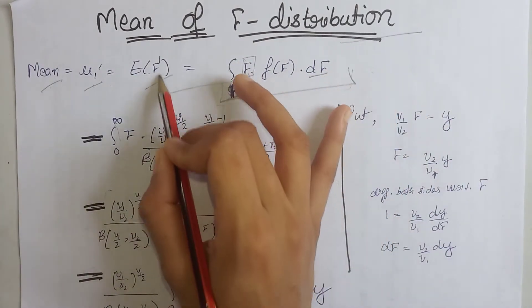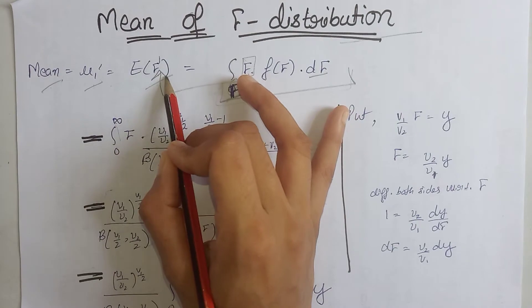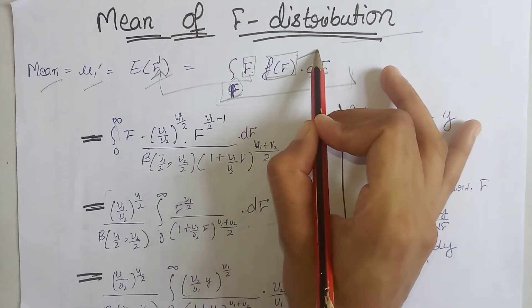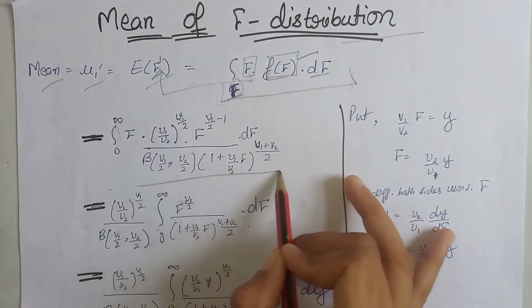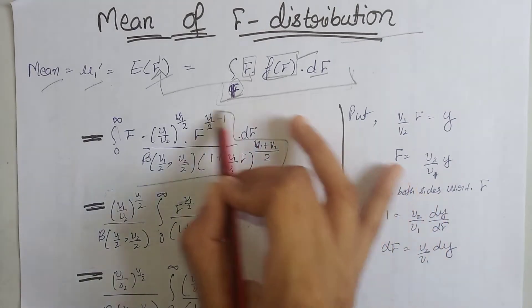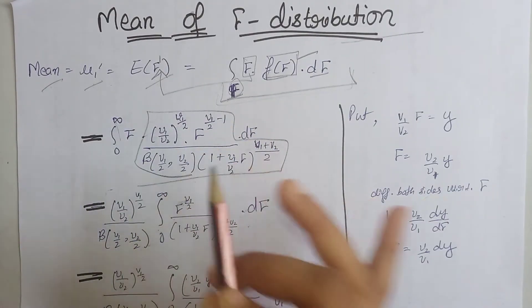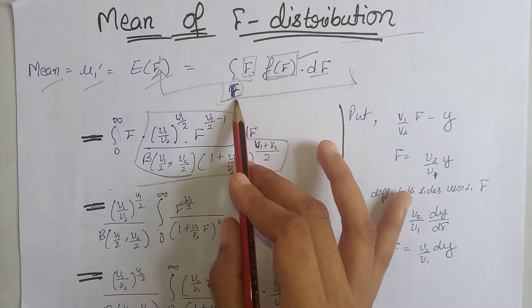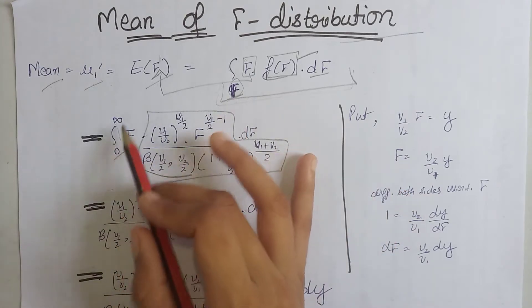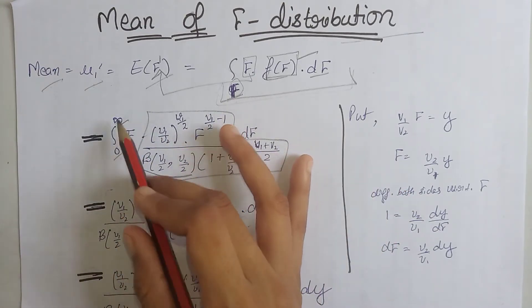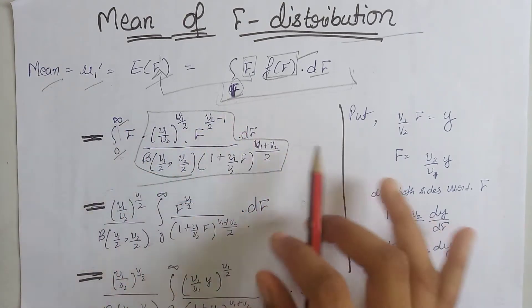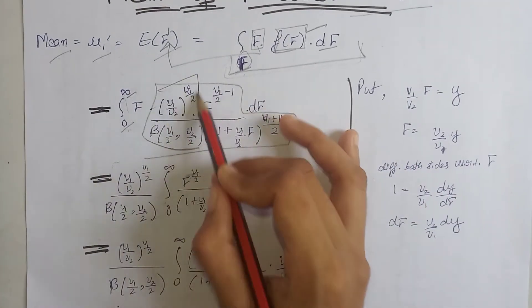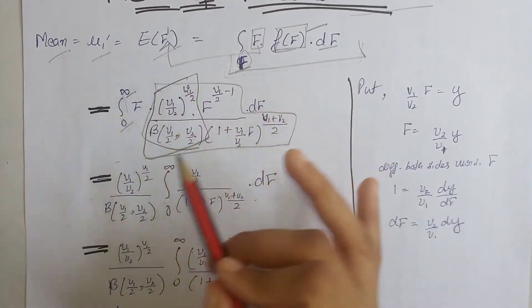Inside the expectation we write the PDF for our F-distribution. In the F-distribution, F takes values from 0 to infinity, so we write the integration from 0 to infinity. We place the constant term outside the integration because it does not contain F.